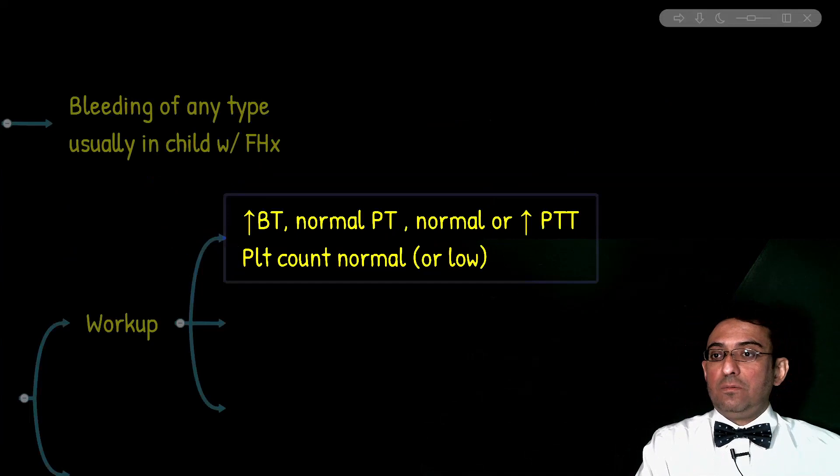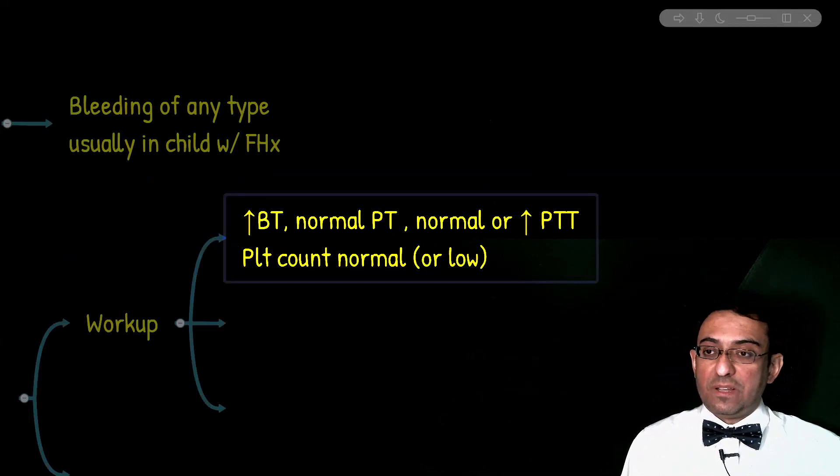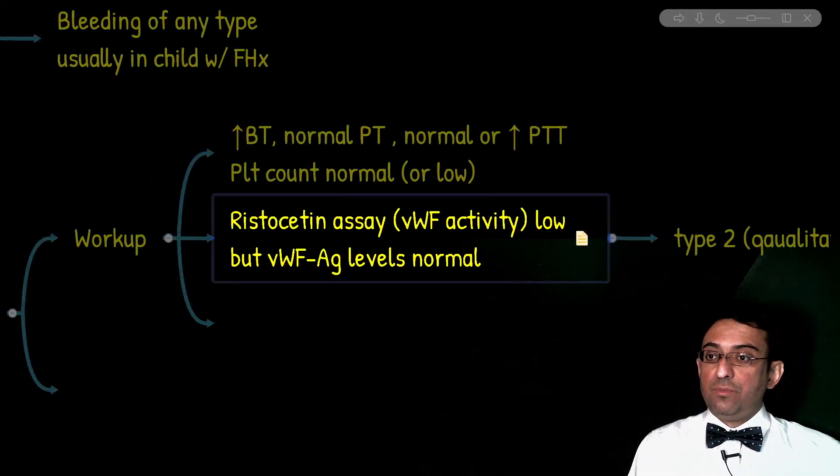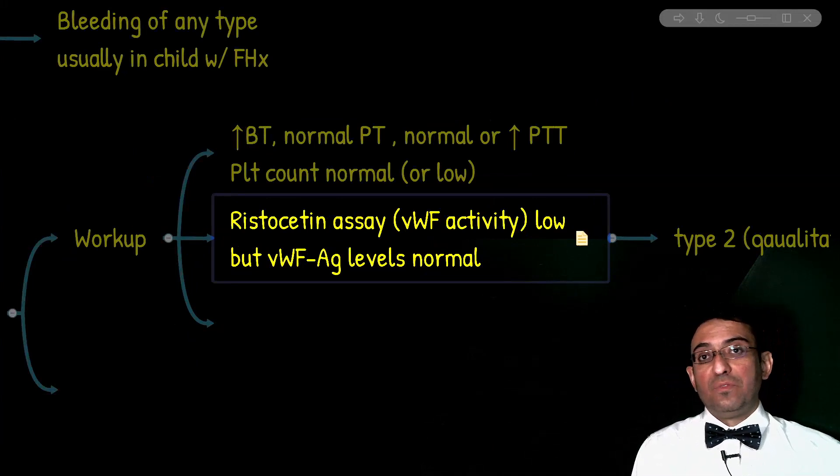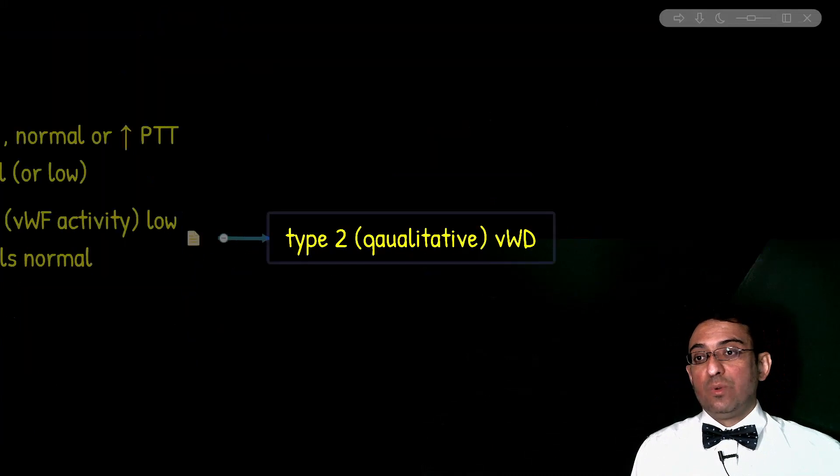Now, we mentioned PTT is usually increased and platelet count is usually normal. However, remember, there are also possibilities that platelet count be low and PTT may be normal, not necessarily increased. So, once more, if we have normal levels of von Willebrand factor antigen, what type of von Willebrand disease we are dealing with? We are dealing with the qualitative type or type II, the dysfunction.